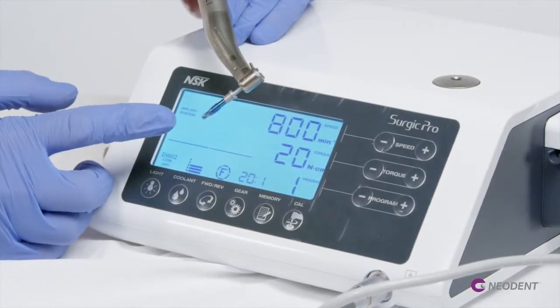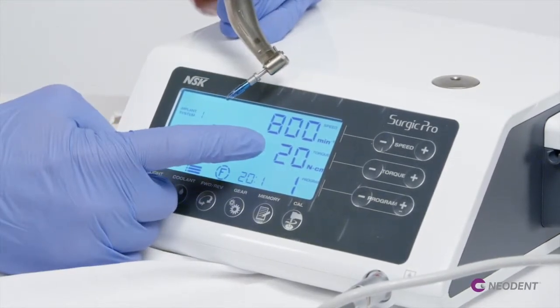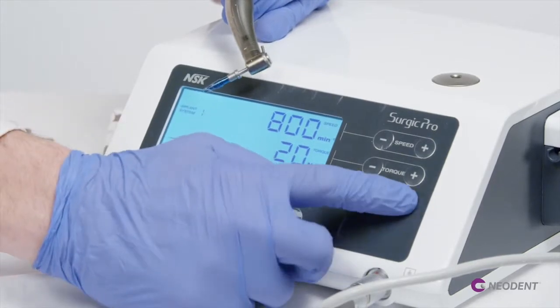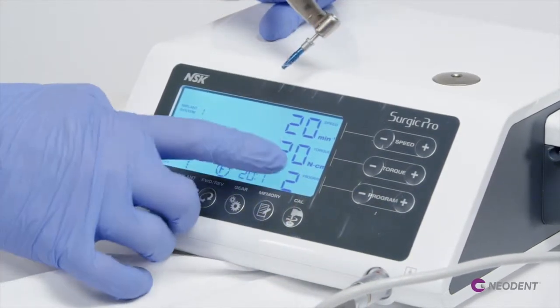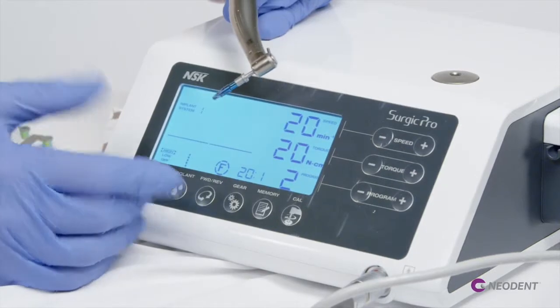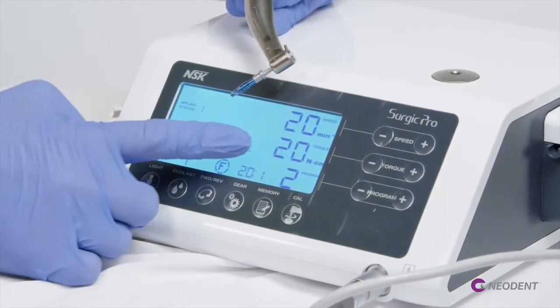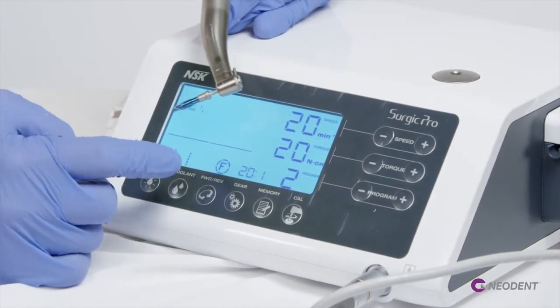Because now we're placing our implant, we want to change the program from 800 RPMs. We want to move this over to newton centimeters and set this at 20 or 35, whatever your preference is, but this is always set around 30 RPMs to spin this implant.